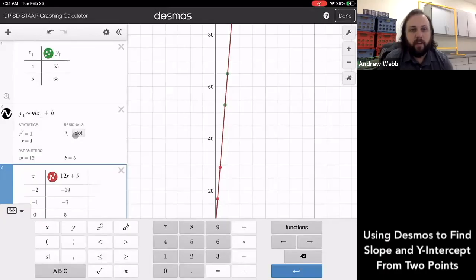Right there from Desmos. So I hope this was helpful for you to find slope and y-intercept from the line, and I hope you have a great day.